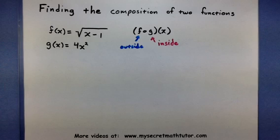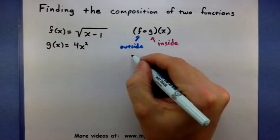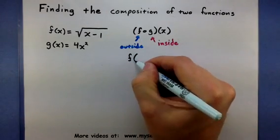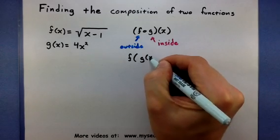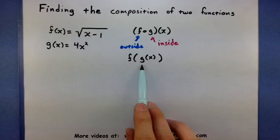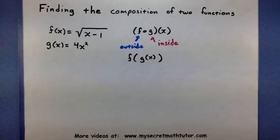So one thing I like to do to help keep the outside and inside functions straight is actually use an alternate notation for the composition. And that alternate notation looks like this. So I write down f, and inside of it, I put the g. Now, that makes my brain a little bit happier because I can actually see that g is definitely inside of f.